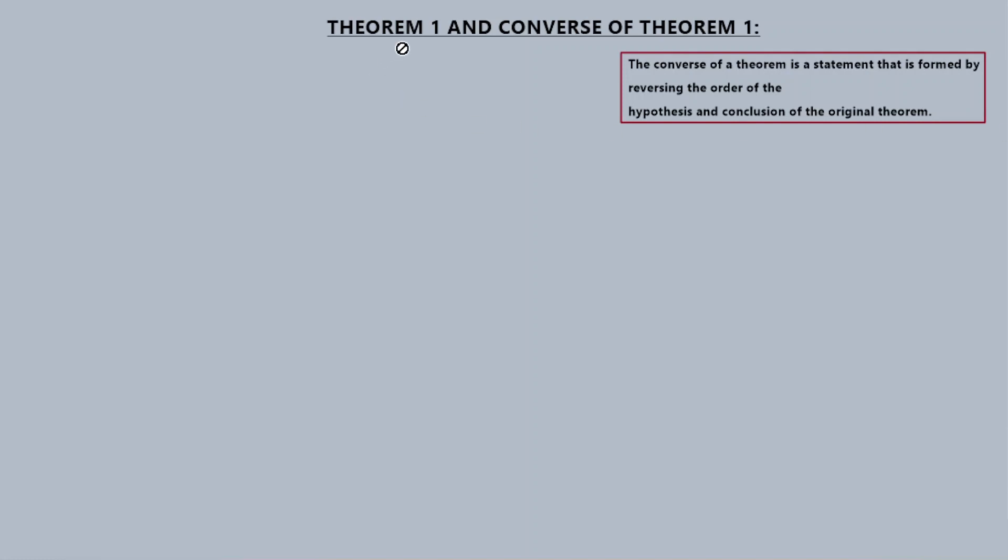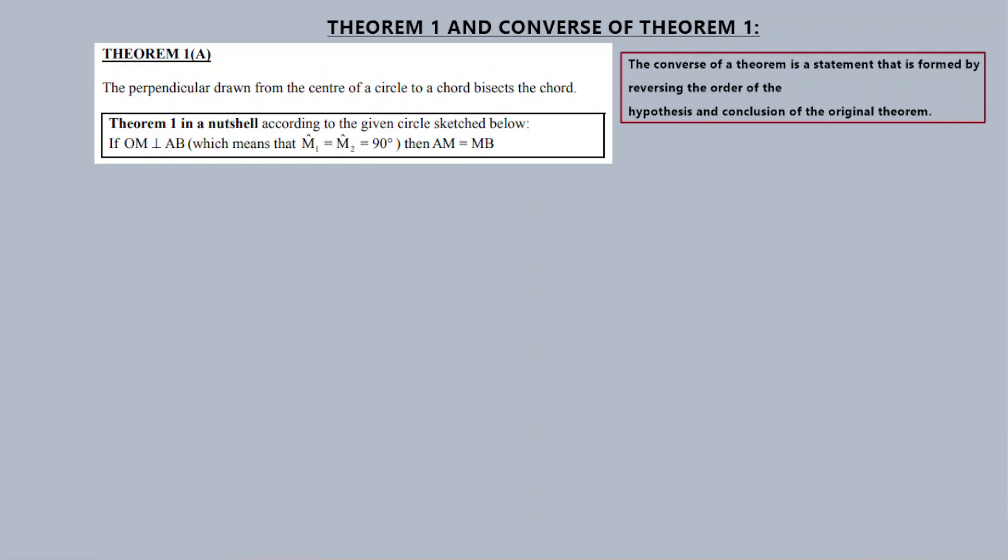The converse of Theorem 1 is true. It's reversing the hypothesis and the conclusion of the original theorem. Theorem 1A is the original theorem. The original Theorem 1B is the converse of Theorem 1A.